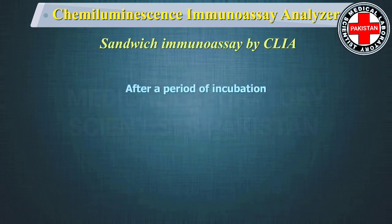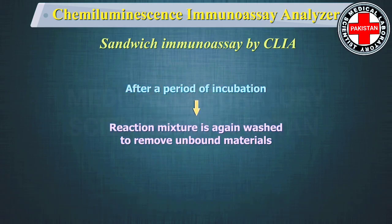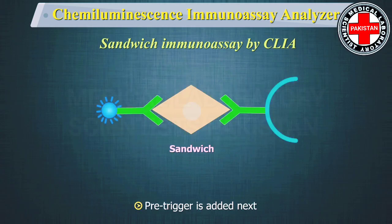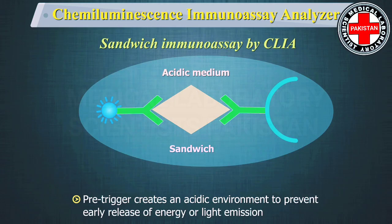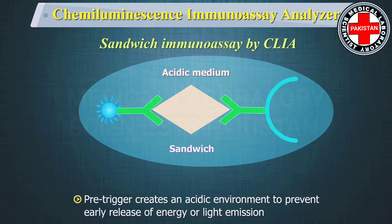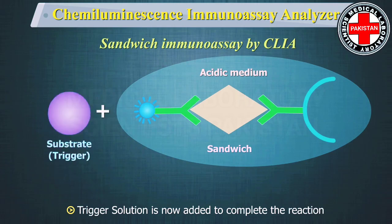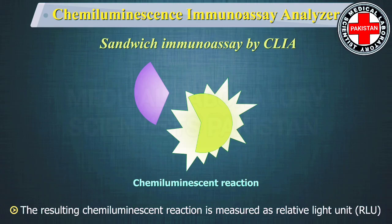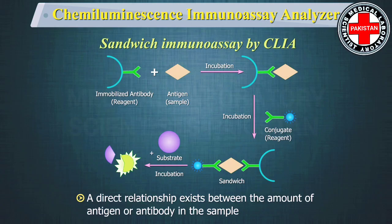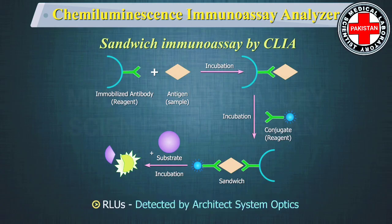After a period of incubation, the reaction mixture is again washed to remove unbound materials. Pre-trigger is added next, which creates an acidic environment to prevent early release of energy or light emission. Trigger solution is then added to complete the reaction. The resulting chemiluminescent reaction is measured as relative light units, and a direct relationship exists between the amount of antigen or antibody in the sample and the relative light units detected by the system optics.